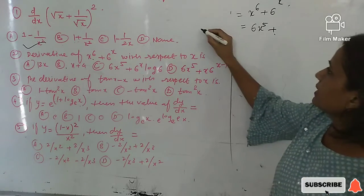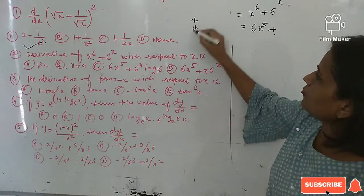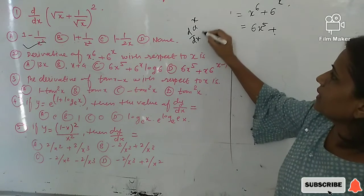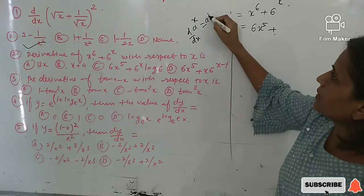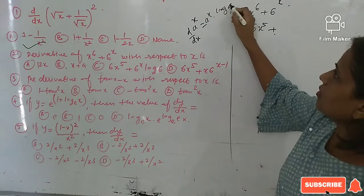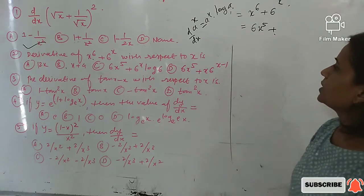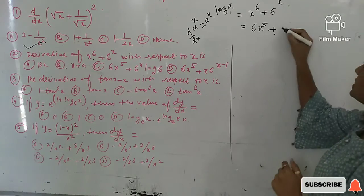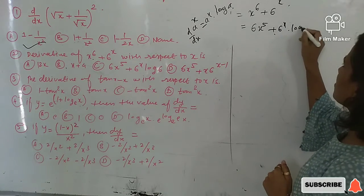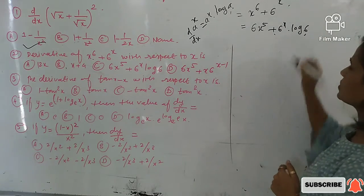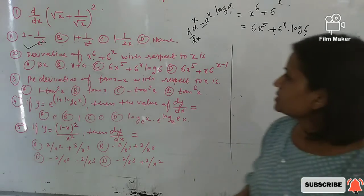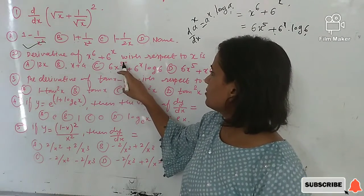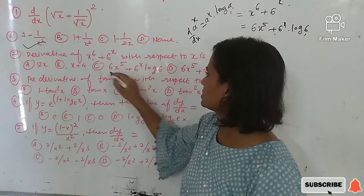For 6ˣ, apply the formula for the derivative of aˣ: the derivative of aˣ is aˣ·ln(a). Using this formula, the derivative of 6ˣ is 6ˣ·log 6. So the correct option is (c): 6x⁵ + 6ˣ·log 6.